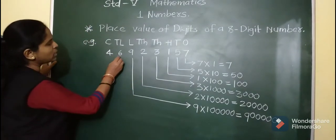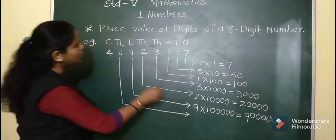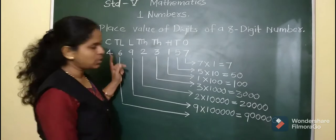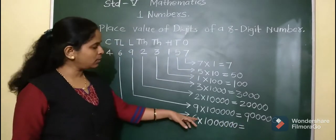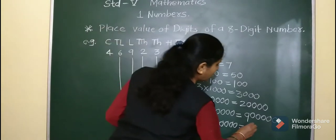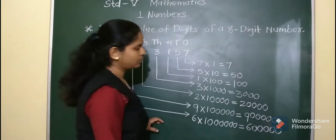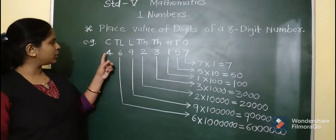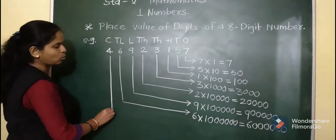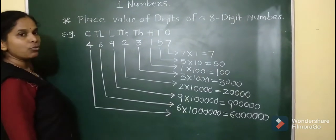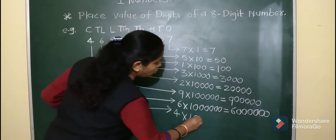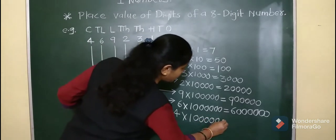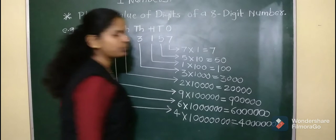6 is at the 10 lakhs place, so we multiply 6 by 10 lakh. The place value of 6 is 60 lakh. Next digit is 4. 4 is at the crores place, so we multiply 4 by 1 crore. 1 crore has 7 zeros. So 4 into 1 crore is 4 crore.